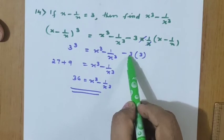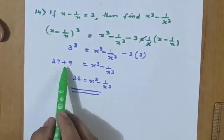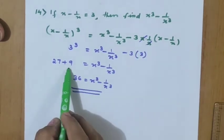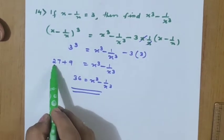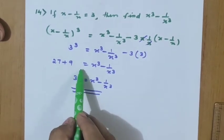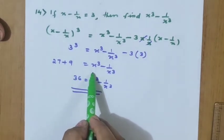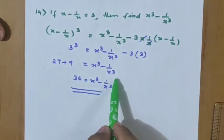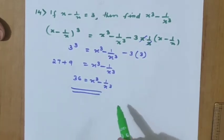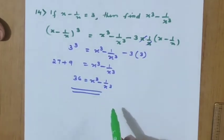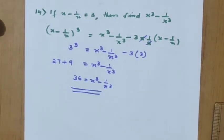Bringing minus 9 to the other side gives plus 9, so 27 plus 9 equals x³ minus 1/x³. Therefore x³ minus 1/x³ equals 36.